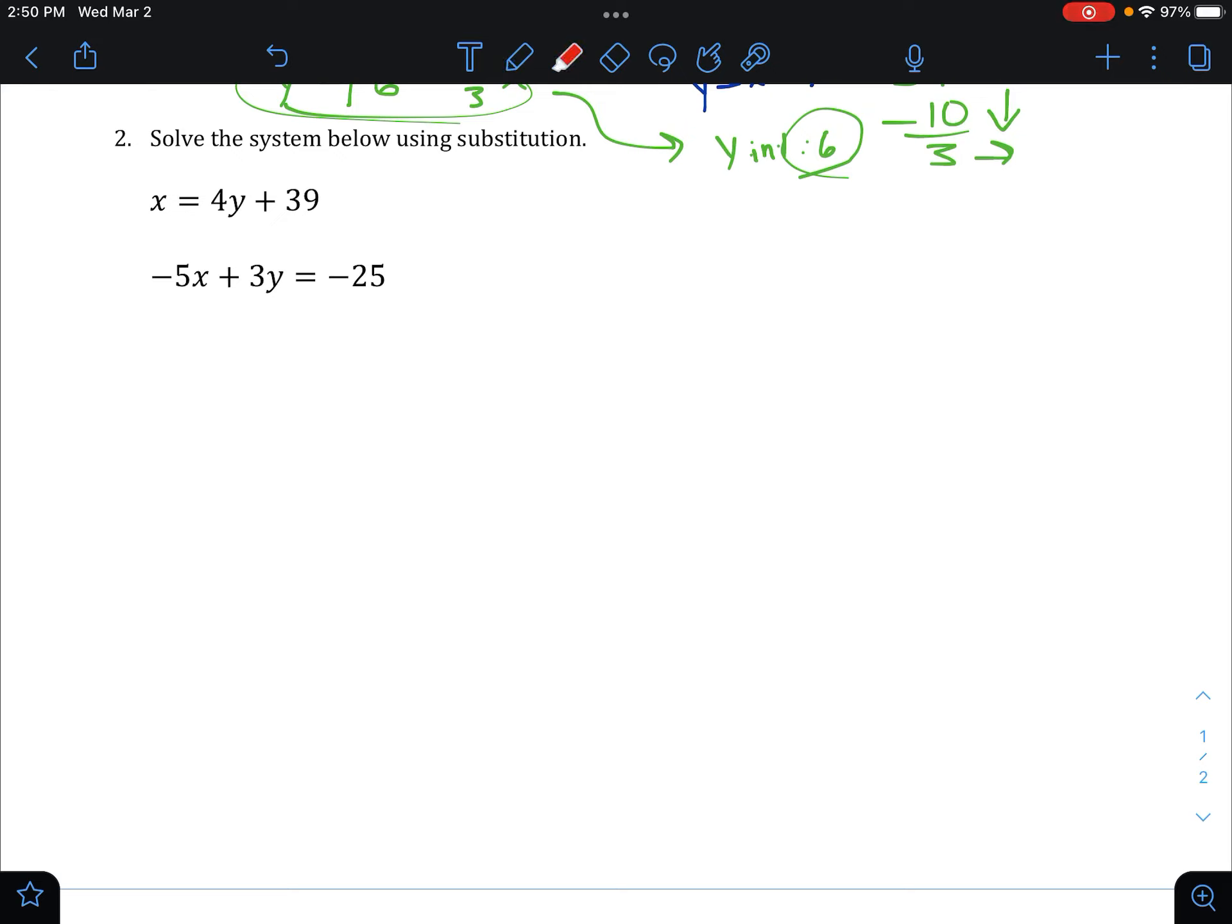And once again, we've got our coordinate as our answer with both the x and the y value because a system has an x and a y as part of its solution, not just one or the other. It has both of them. And that's how we use substitution to solve this system.